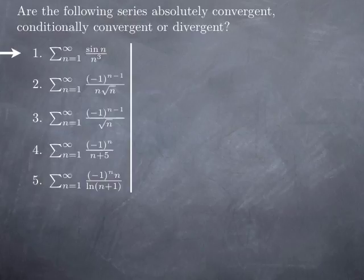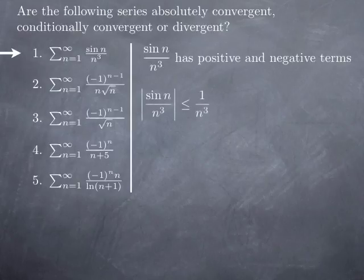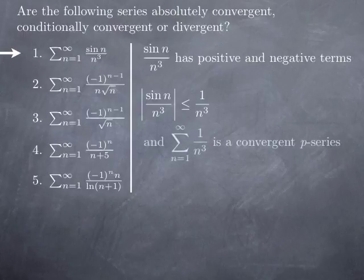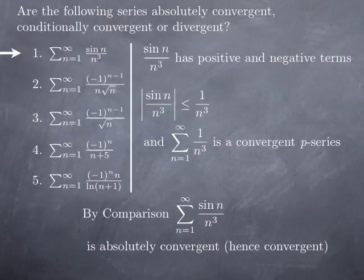Starting with the series from 1 to infinity of sin(n)/n³. This series has some positive and some negative terms but is not necessarily alternating, as we may have several positive terms in a row. Looking at the absolute value of the general term, |sin(n)|/n³ is bounded above by 1/n³. The series of 1/n³ is a convergent p-series with p = 3 > 1, so by comparison the series of |sin(n)/n³| is convergent, meaning our original series is absolutely convergent, and in particular convergent.